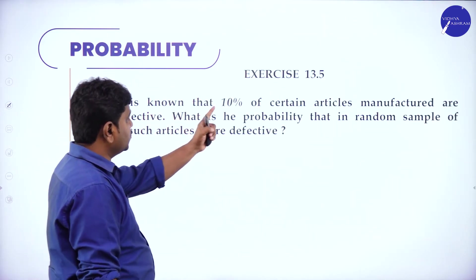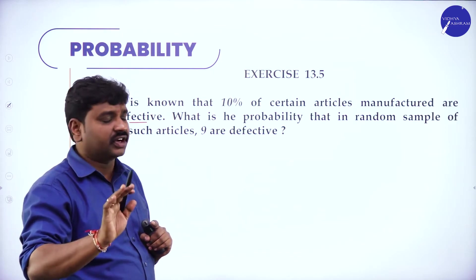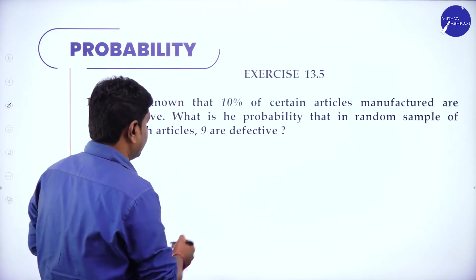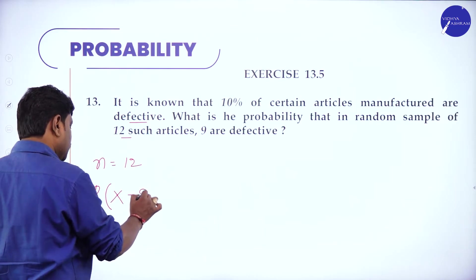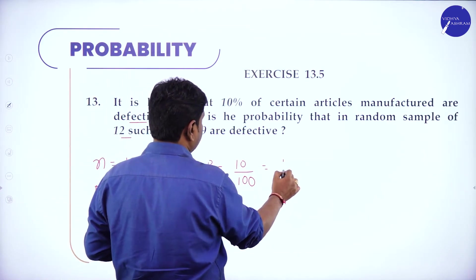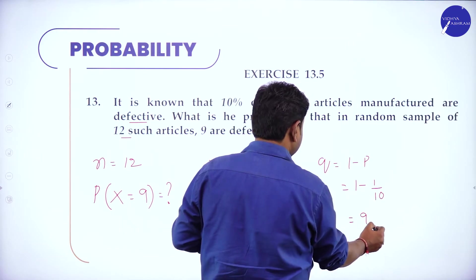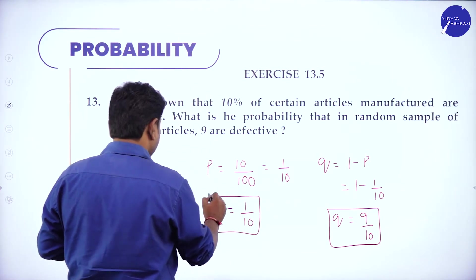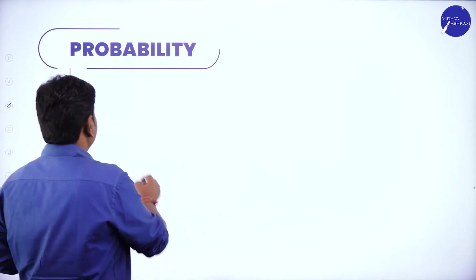Next problem: 10% of certain articles manufactured are defective, meaning 10 out of 100 are defective. What is the probability that in a random sample of 12 articles, exactly 9 are defective? So n = 12, x = 9, p = 10/100 = 1/10, q = 1 − 1/10 = 9/10.